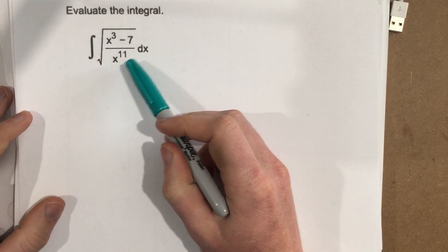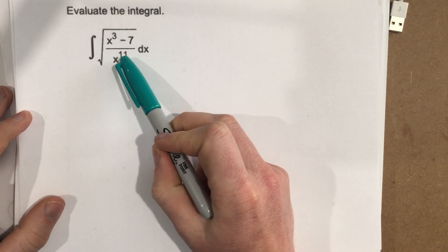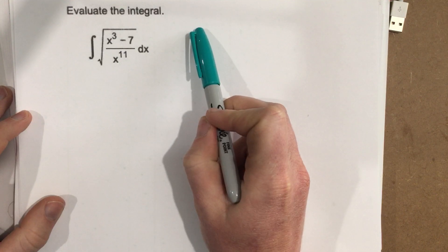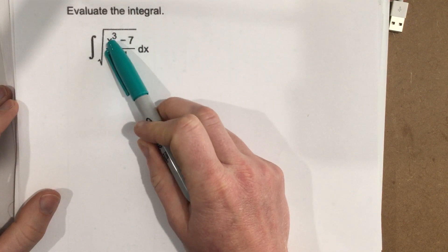Well, when I look at this, if I made u equal to x to the 11th, and I go ahead and take the derivative of that, that'd be like 11x to the 10th. That's not going to cancel the x cubed.